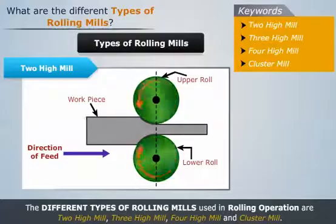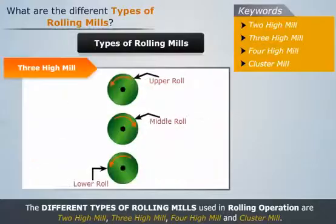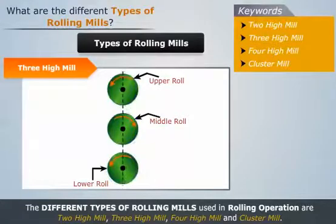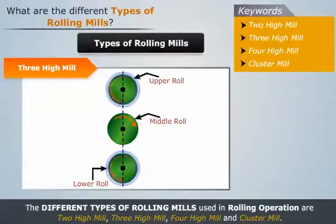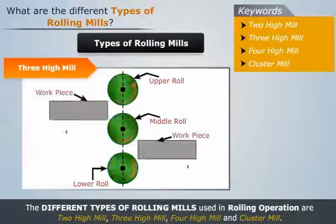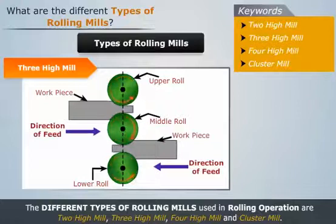Now let's study about the 3 high mill. It consists of three identical horizontal rolls placed exactly over one another. Here the upper and lower rolls rotate in the same direction, whereas the middle roll rotates in the opposite direction. In this type, two metal work pieces can be rolled simultaneously in opposite directions.